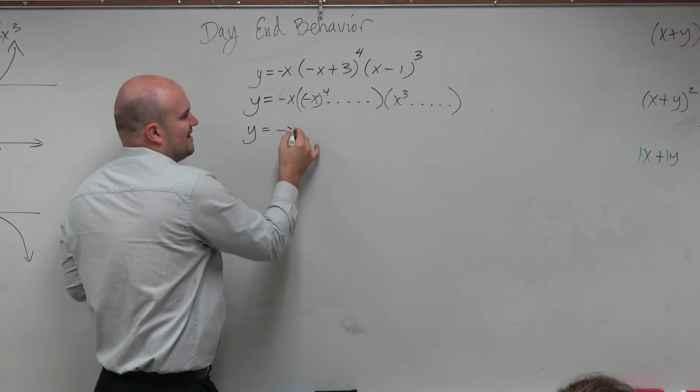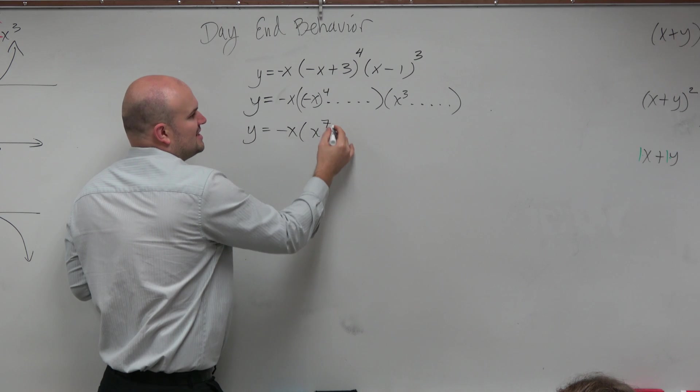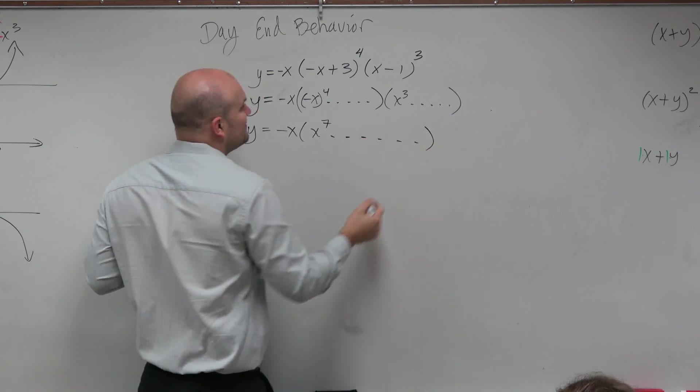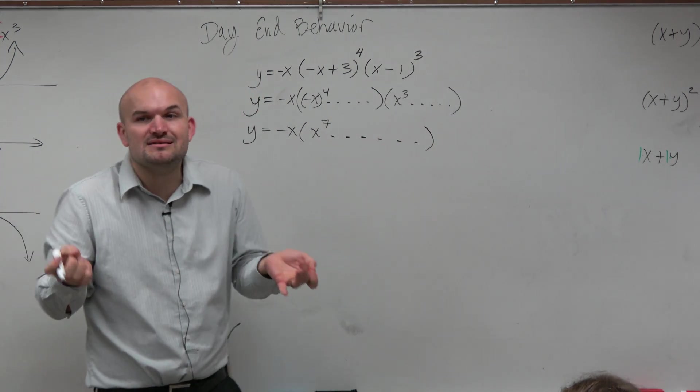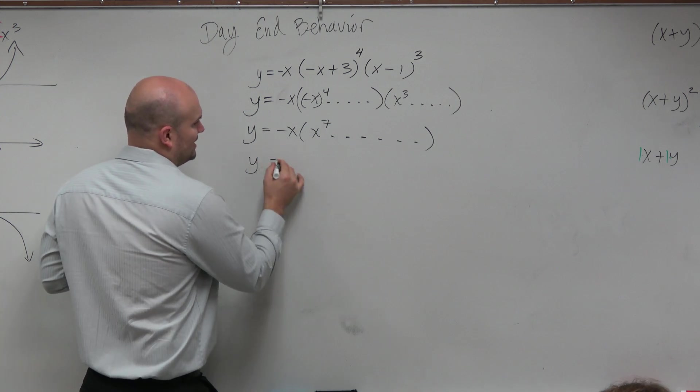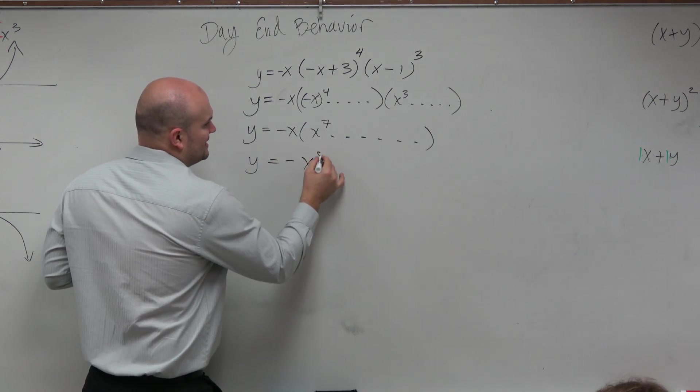So we have y equals negative x times x to the seventh. I don't even know what the rest of the stuff is, but it doesn't matter. Here, now we're dealing with y equals negative x to the eighth.